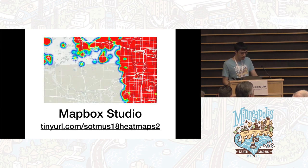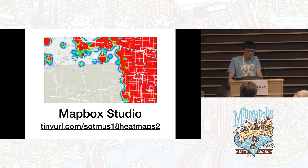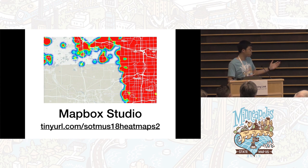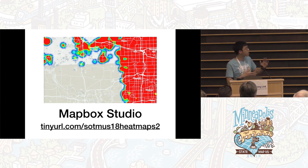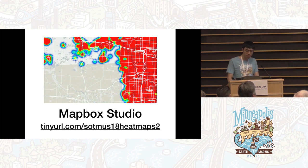At last year's State of the Map US, I gave a workshop about building a heat map in Mapbox Studio using Overpass results. The example was: the community had mapped a bunch of buildings and I wanted to see roughly the geographic distribution. The workshop wasn't recorded, unfortunately, but a written version is available at tinyurl.com/sotmus18heatmaps2.